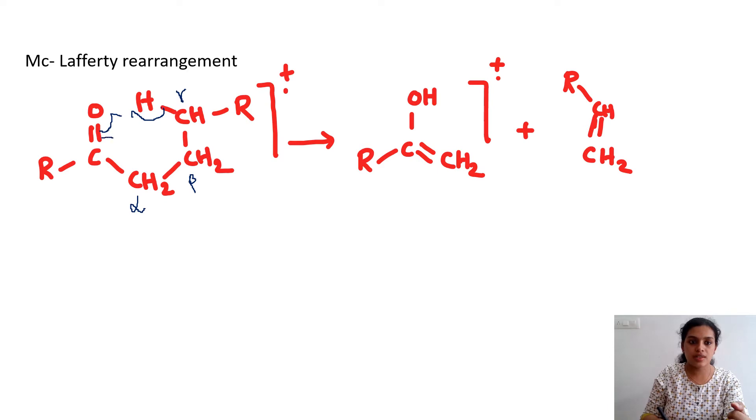And therefore, as a result, this bond comes down, this goes up, this will go up and this will come down. Now you are getting a species like this plus an alkene.